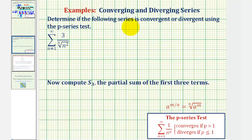Determine if the following series is convergent or divergent using the p-series test. We have the summation from n equals one to infinity of three divided by the cube root of n squared.